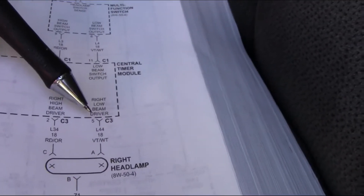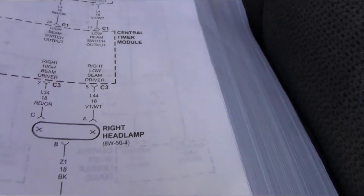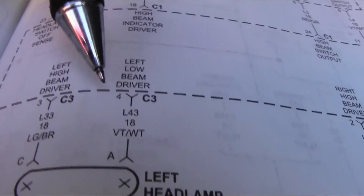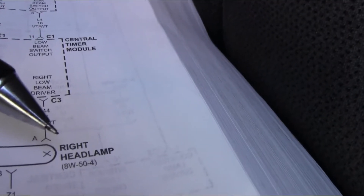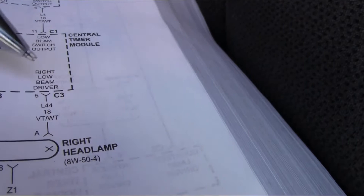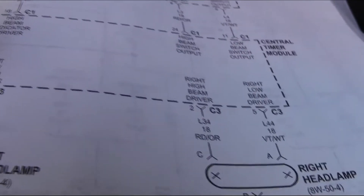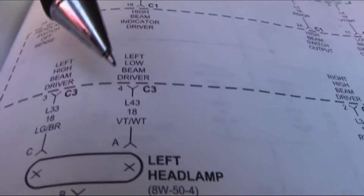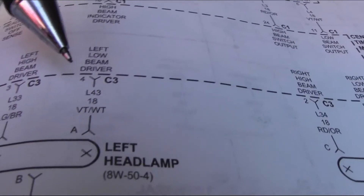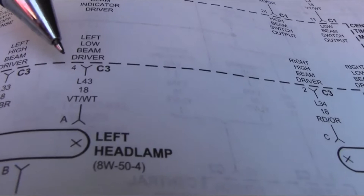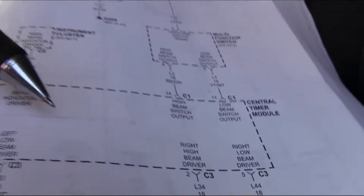Pin 5, violet and white, goes to the right headlamp. Pin 4, violet and white, goes to the left headlamp. I know the right headlamp works on pin 5, so if I can just test the voltage, continuity, or amperage coming out on pin 4, I can tell if it's sending power correctly out of the central timer module.